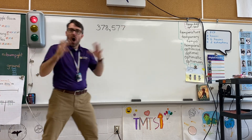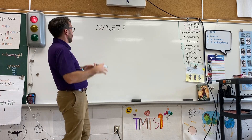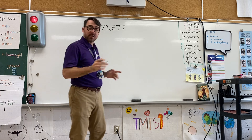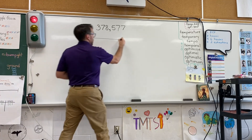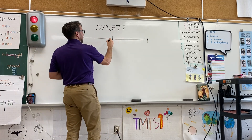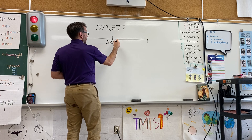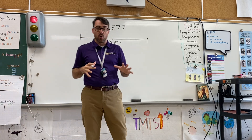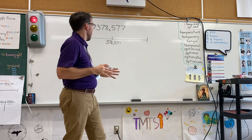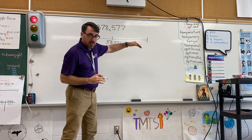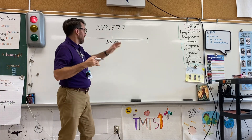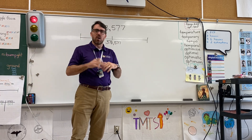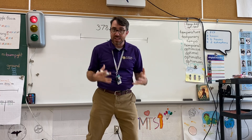All right, big complicated number: 378,577. I want to make this more friendly. So on a number line like this, I'll plot this right here in the middle. I want to make it more easy to work with. A couple of options — I could round it up to a number, I could round it down to a more friendly number. It's totally up to what I want to do. There's no real right or wrong answer.